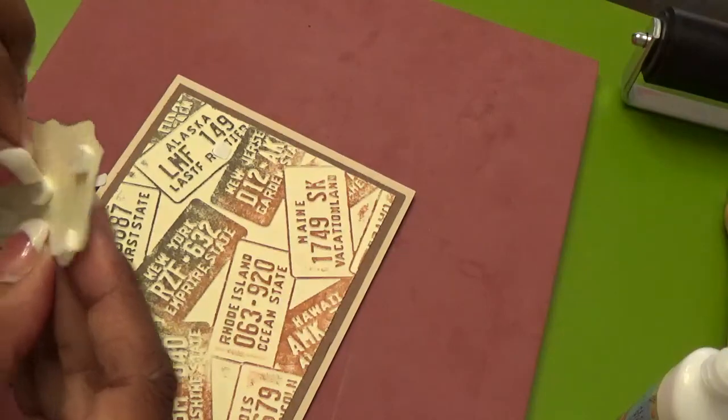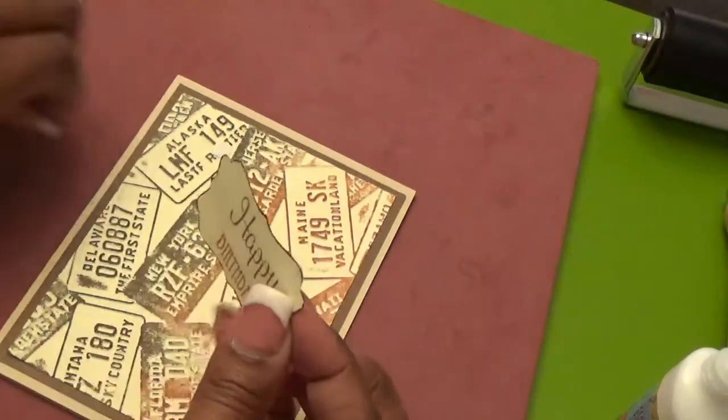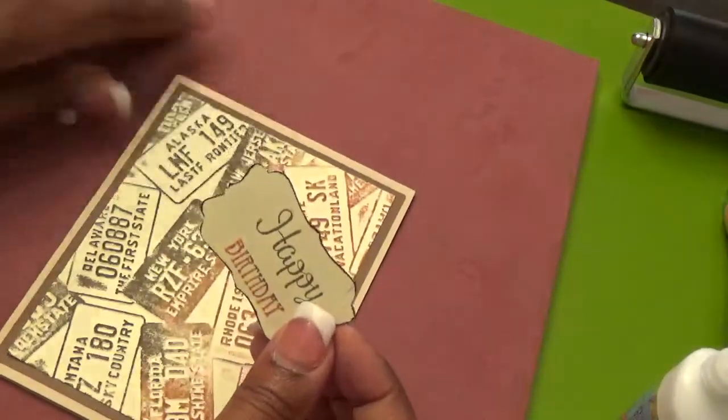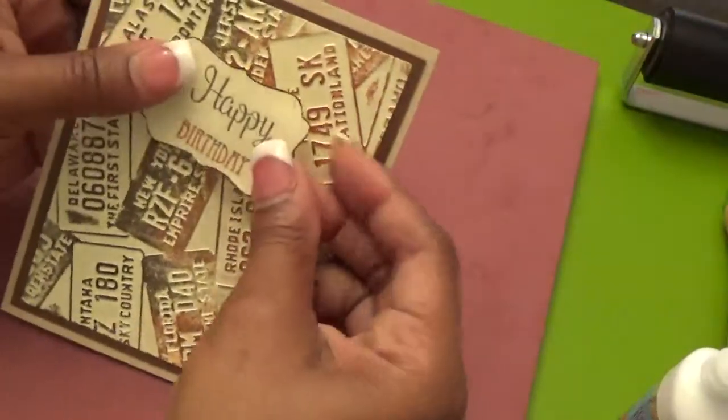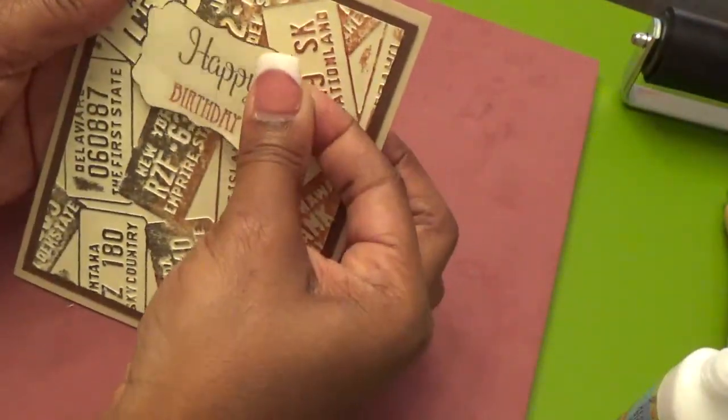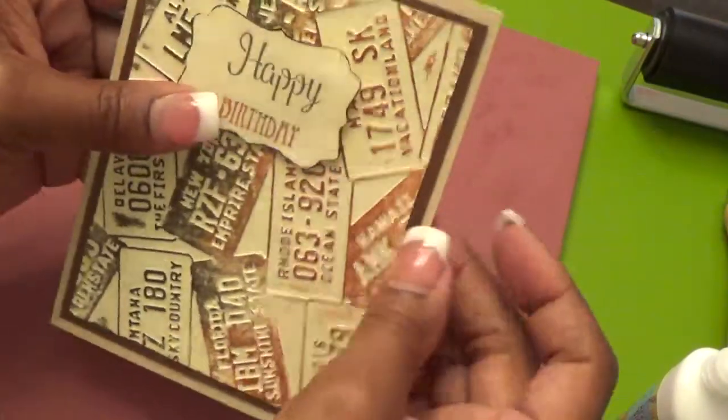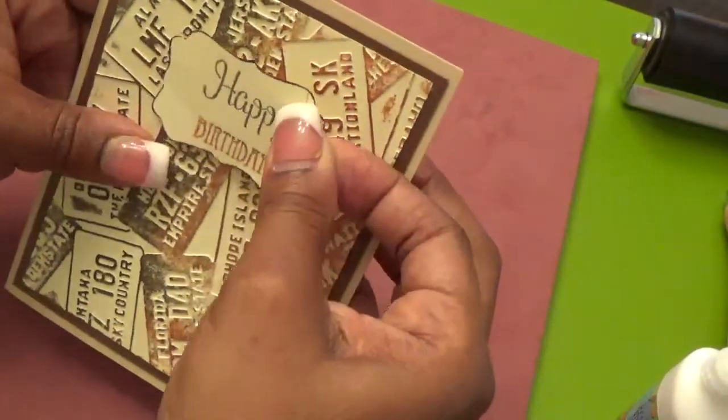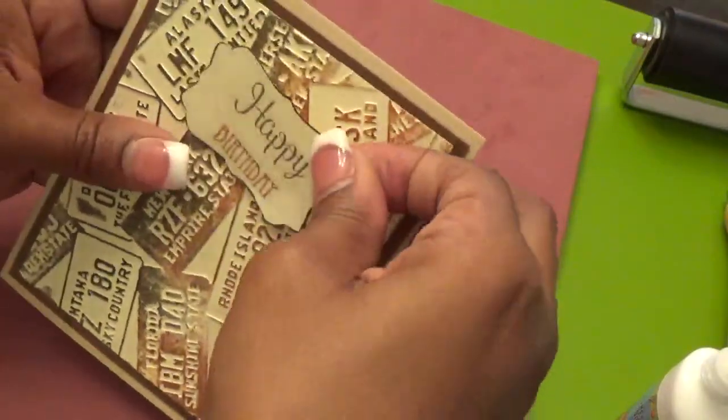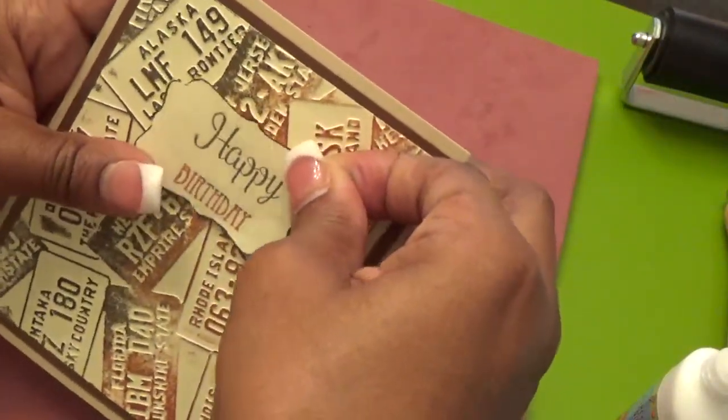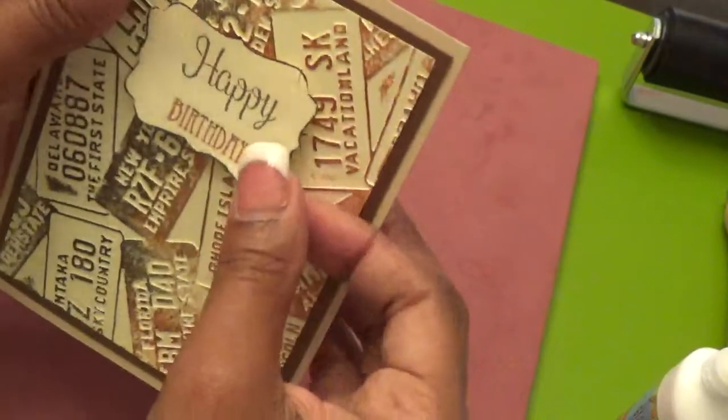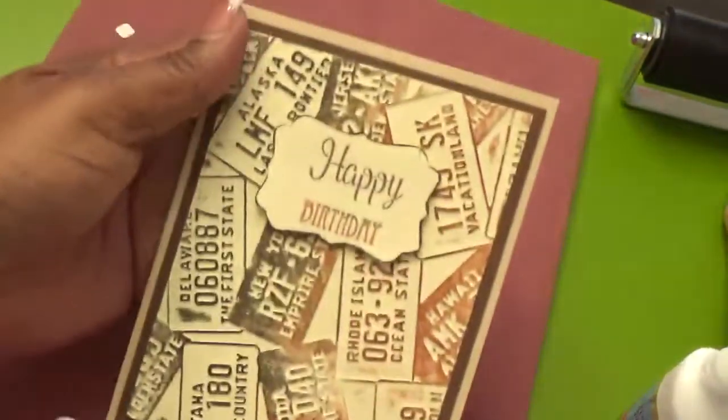And of course, if I was doing a female card, it would be some bling on it. But because it's not a female card, I'm not worried about blinging it out. And then we want to try and center it. And that's off. There we go.